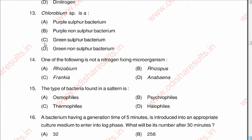Question thirteen: Chlorobium species is A: a purple sulfur bacterium, B: a purple non-sulfur bacterium, C: a green sulfur bacterium, D: a green non-sulfur bacterium. The correct option is C: green sulfur bacterium.